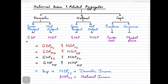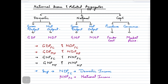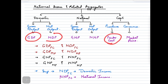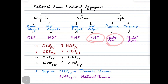Based on all these components, we have eight aggregates to remember: gross domestic product at market price, net domestic product at market price, gross domestic product at factor cost, and net domestic product at factor cost. Similarly, for the national component, we have gross national product at factor cost, net national product at factor cost, gross national product at market price, and net national product at market price.